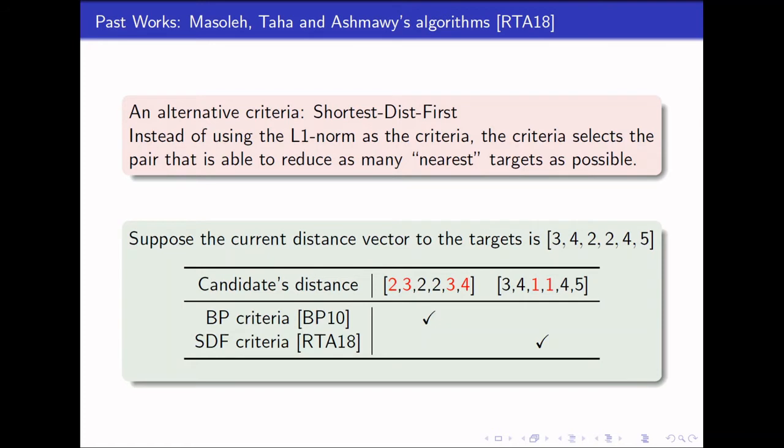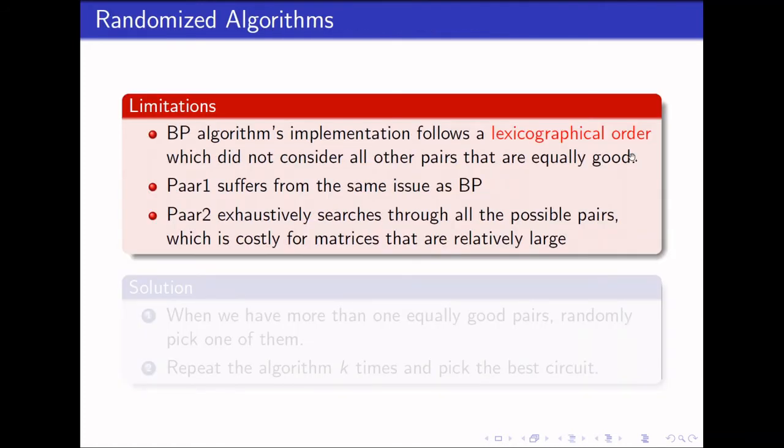Over here is an illustration of how these two criteria differ. Suppose the current set S has a distance vector to the targets of 344245, and there are two possible candidates. The first one is able to reduce in total four of them. Whereas in SDF criterion, it actually favors the second one as row 3 and row 4 are deemed to be the nearest target given by the minimum distance in the distance vector.